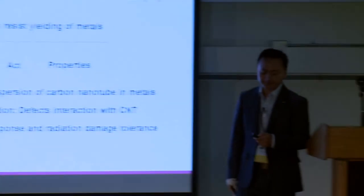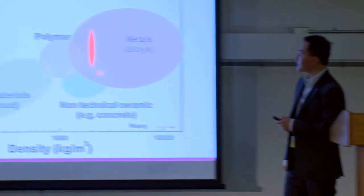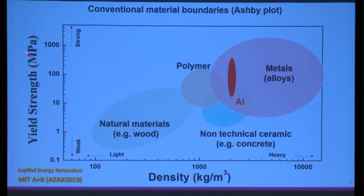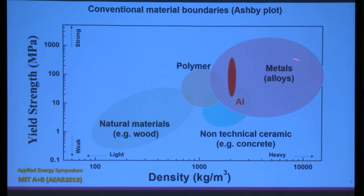Before the main talk, the Ashby plot — a conventional material design diagram — is introduced. The x-axis is density and the y-axis is yield strength. Generally, lower density corresponds to lower strength and higher density to higher strength. Within metals, groups such as aluminum, nickel, copper, and iron occupy different regions, and even at the same density, manufacturing processes can change properties. This diagram is used to design materials and applications.